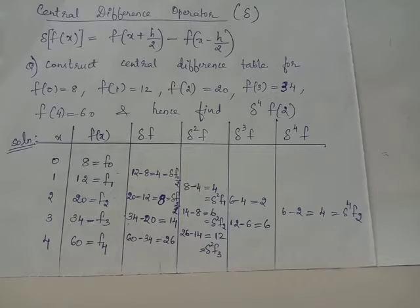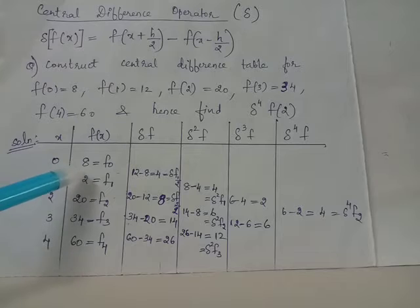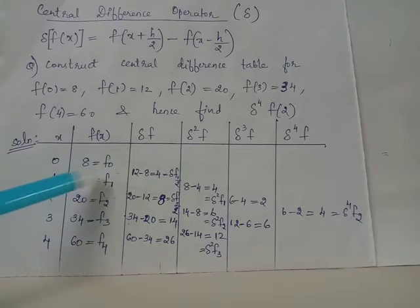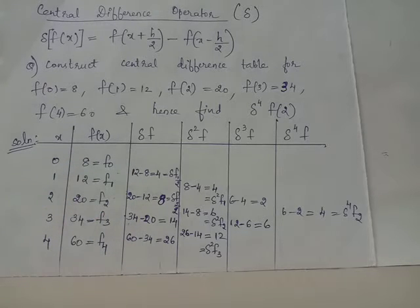The first central difference, notated as delta f, is obtained by taking consecutive differences. The first value to be written here is 12 minus 8 which is 4. Next value will be 20 minus 12 which is 8. These differences are written midway between the two values lying in the preceding column.